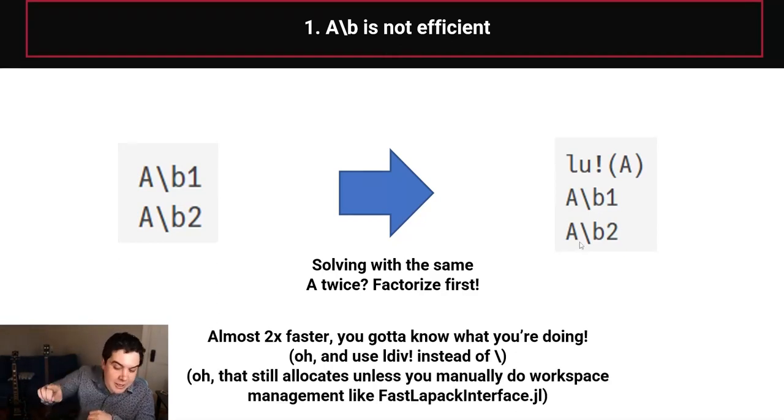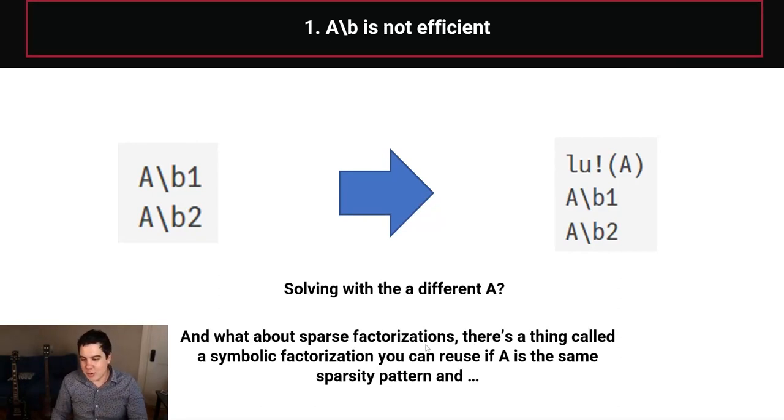which is not something that base.LinearAlgebra gives you access to. So there's a different package, FastLapackInterface.jl, which has a lower level interface, so that way you can define this workspace and avoid that allocation. So ha, if you really want more, even ldiv and all the bang operations doesn't get you to null allocations. But especially when you get into the sparse case, well, in the sparse case,